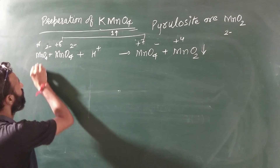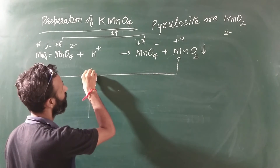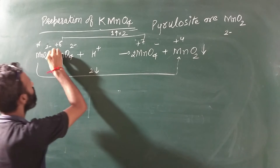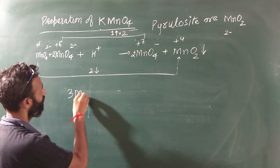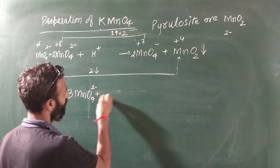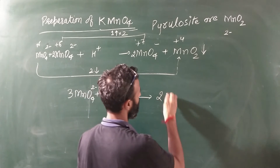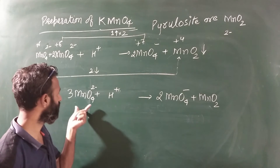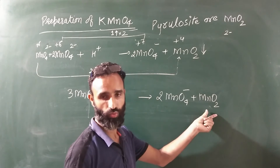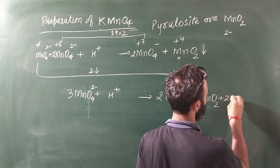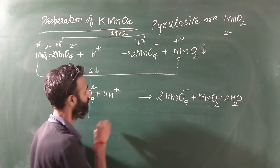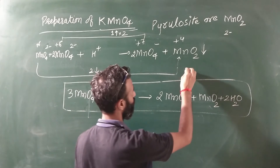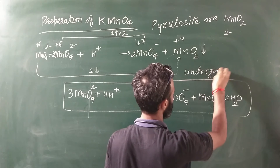Plus 6 goes to either plus 4 or plus 7. To balance this, we take 3 MnO4 2 negative and get 2 MnO4 negative plus MnO2. We add 2H2O and balance the H plus ions accordingly. This is the reaction where the substance undergoes disproportionation.